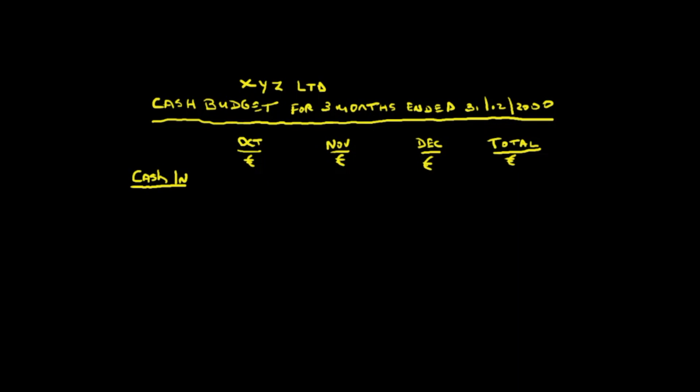One source is from the customer — when we sell the customer our goods, they'll pay a month late. But also, we're all going to put money into this business, into this company. We're going to invest. The five of us are going to invest our money in the business. We call it capital or equity — this is money from us. In business, whether it's a company or not, we always treat the business as being separate from the owners. So if we're putting money in, it's cash in as far as the business is concerned.